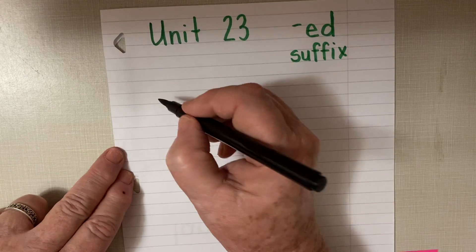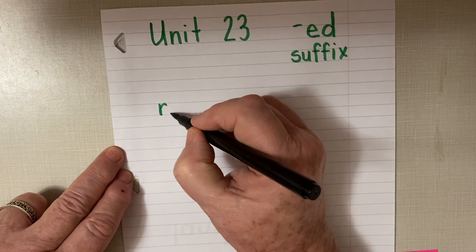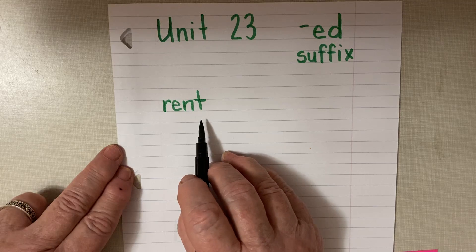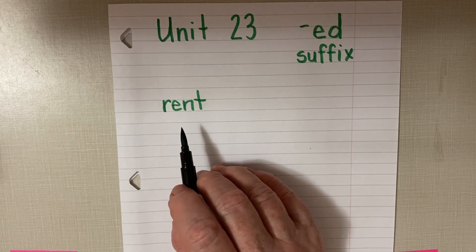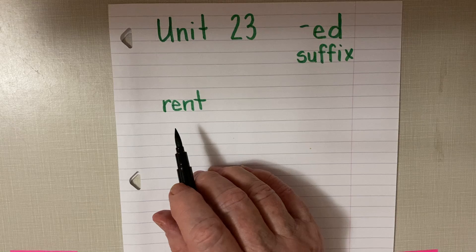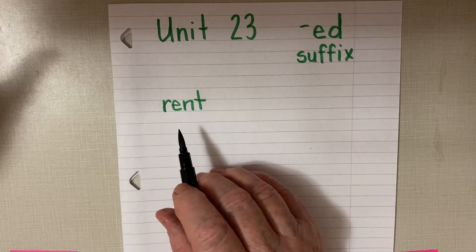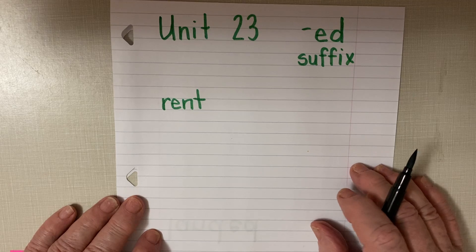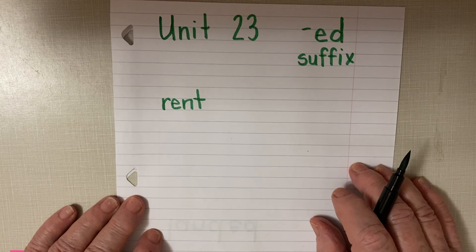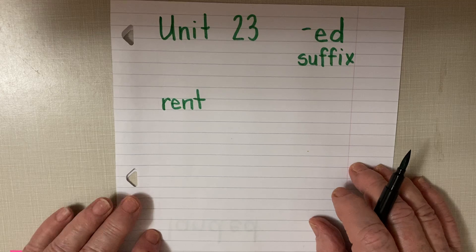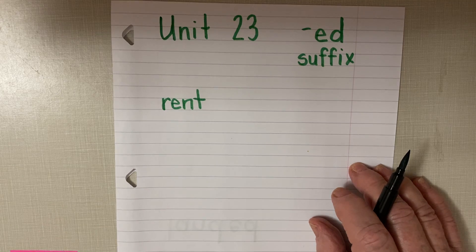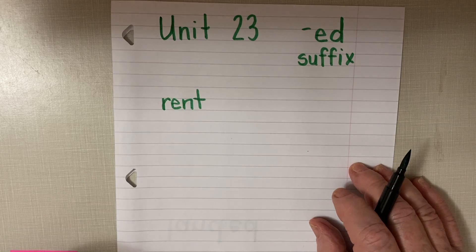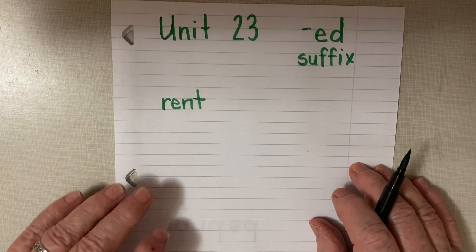Here's the first word: rent. When you rent something, you give someone money to use it for a while. You don't buy it, but you use it for a while. You might rent a house, a car, or a DVD from one of those boxes at the grocery store. It's something that you pay money for and you get to use it.